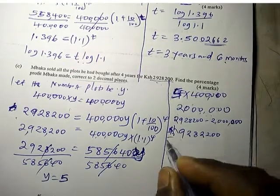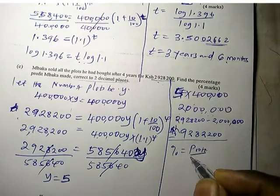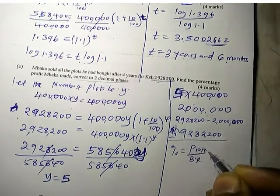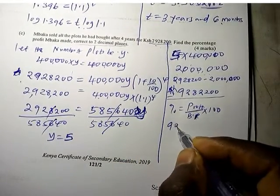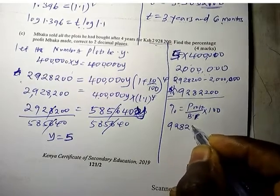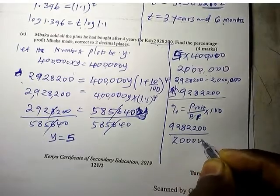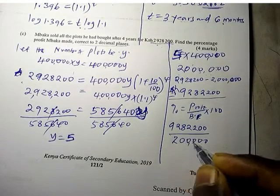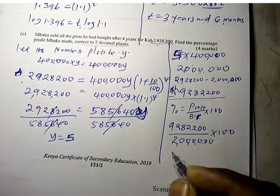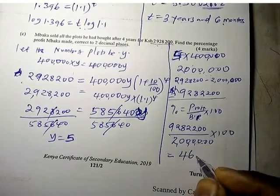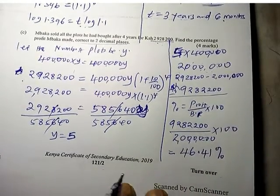Percentage profit equals profit divided by buying price, the original price, times 100, which is 928,200 divided by 2 million times 100, and that gives us 46.41%.